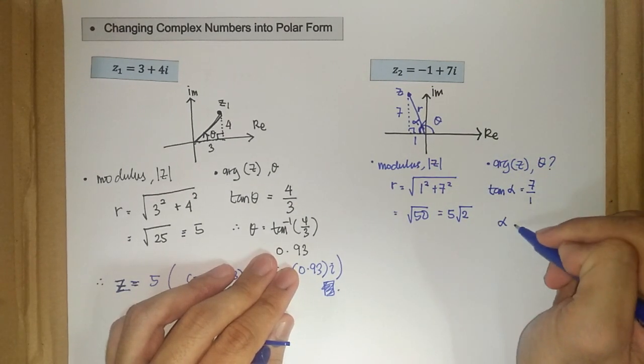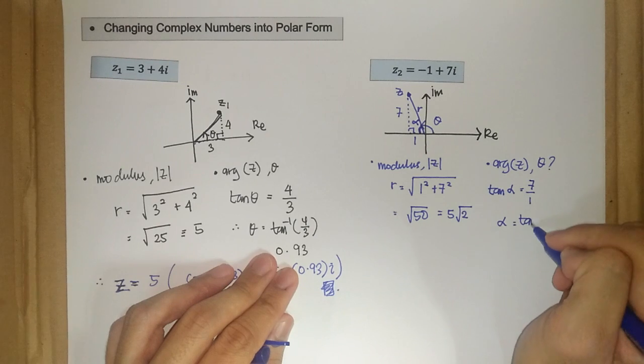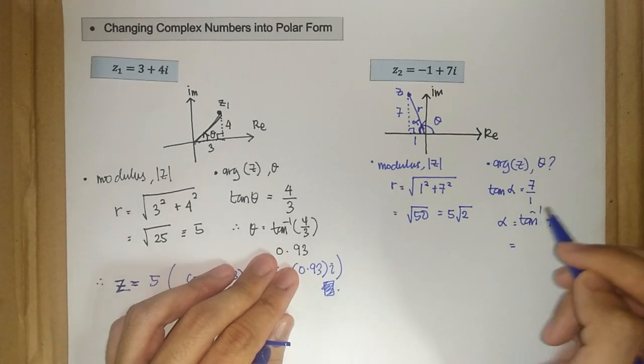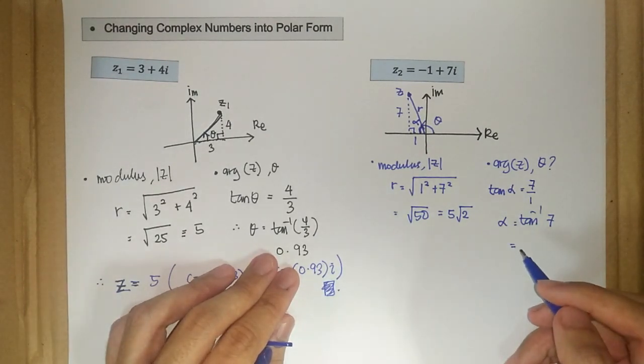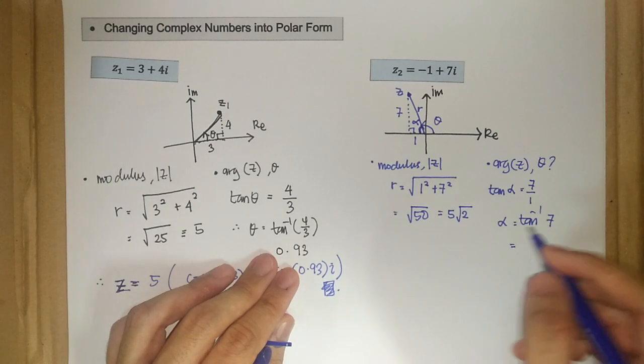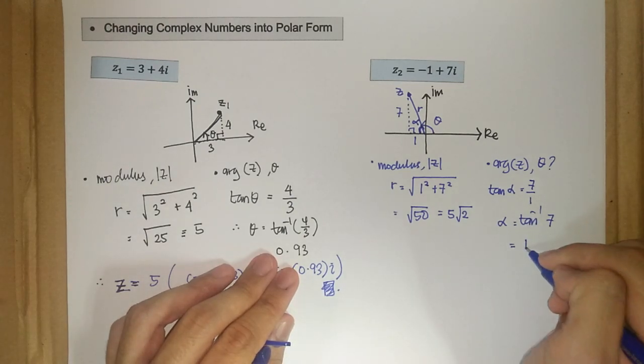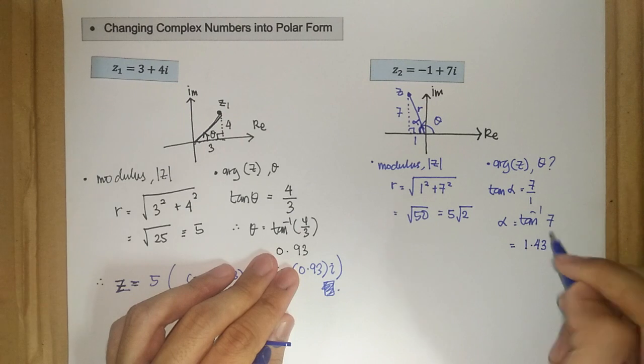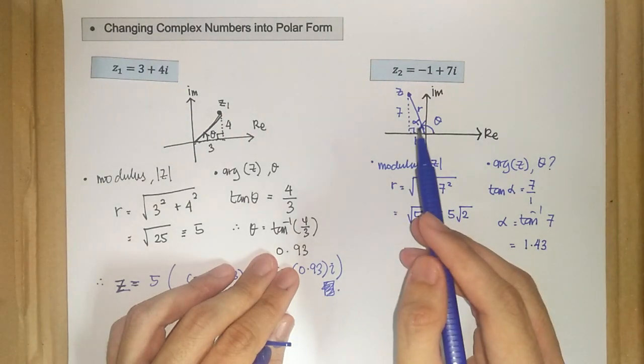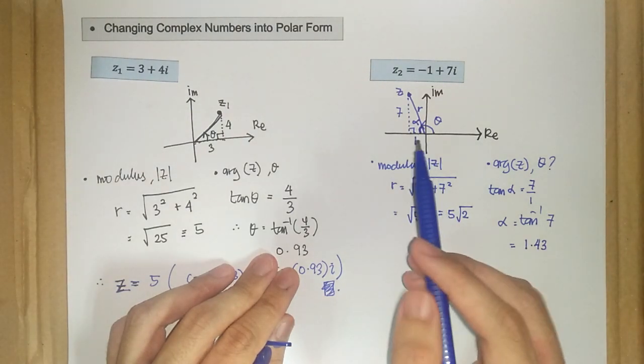So alpha is just the arctan of seven, which equals 1.43. So alpha here is 1.43. Therefore,